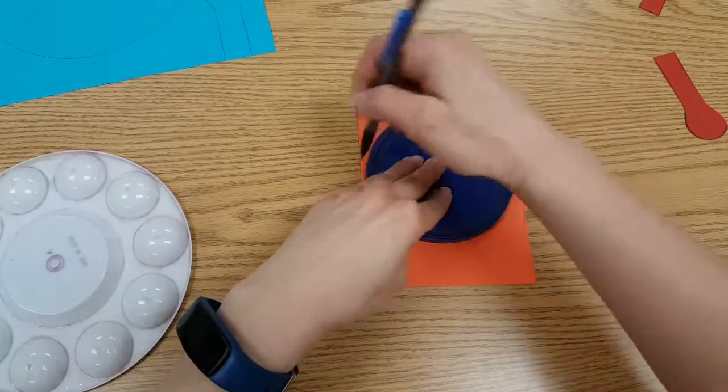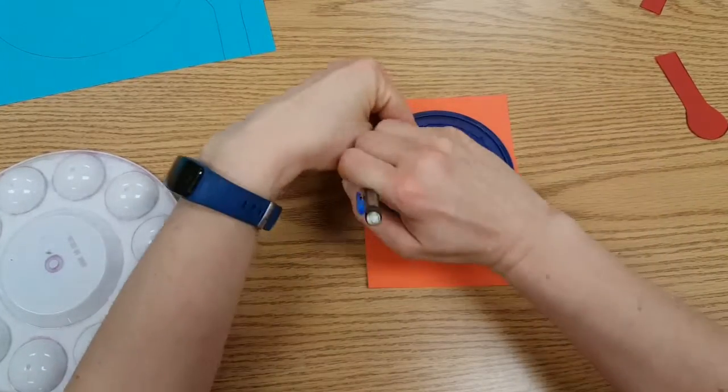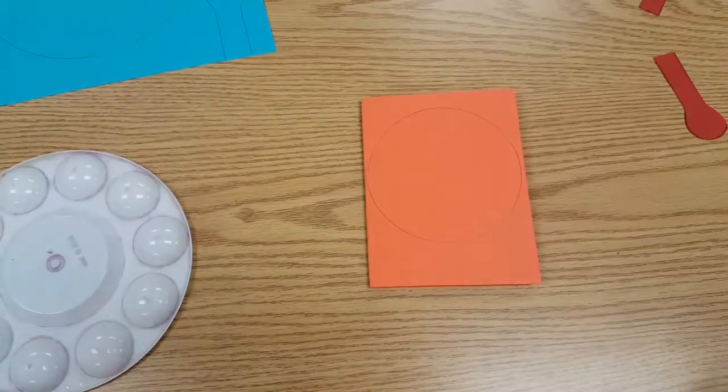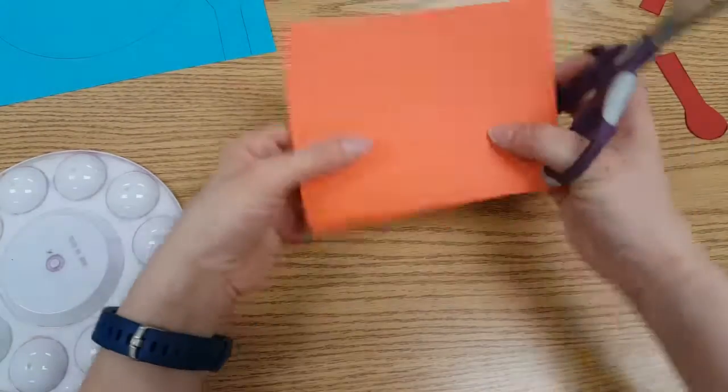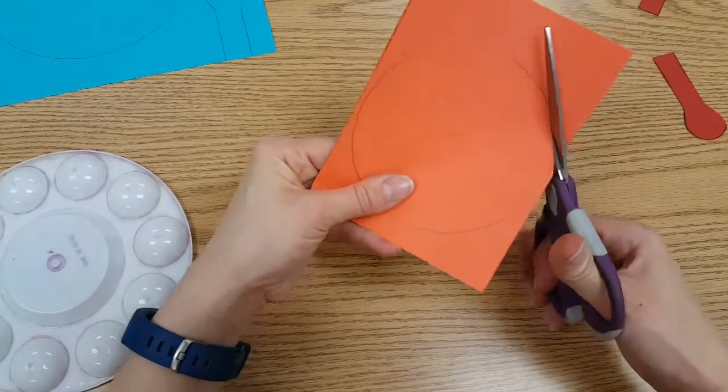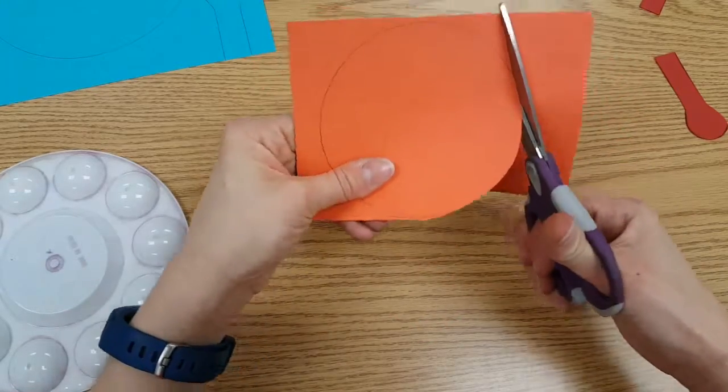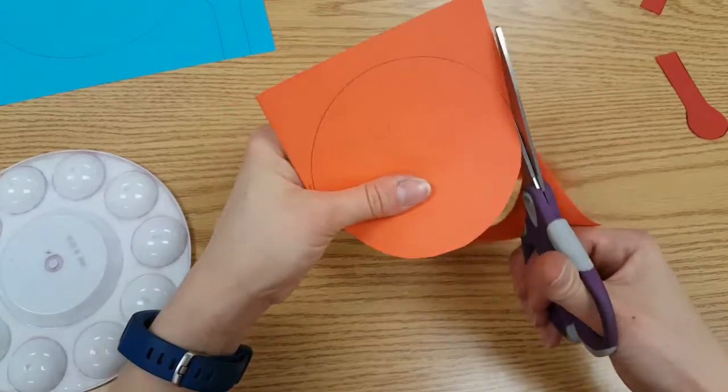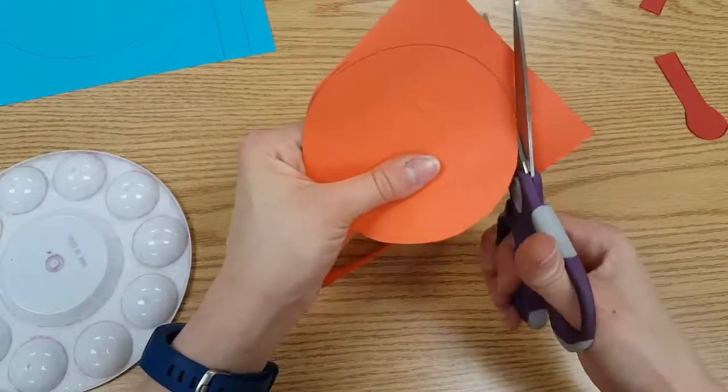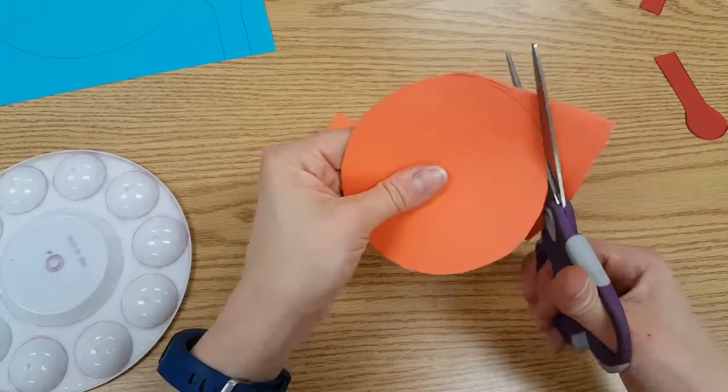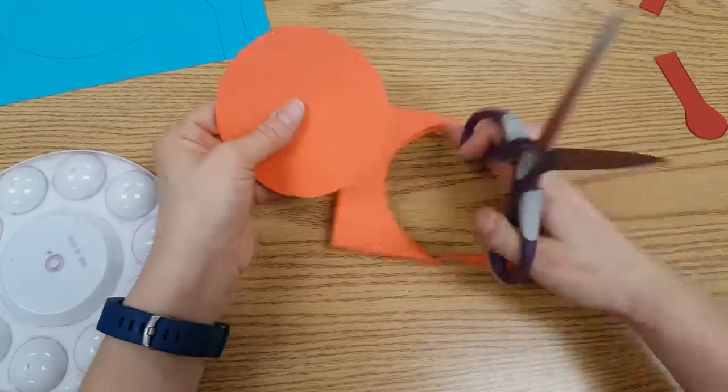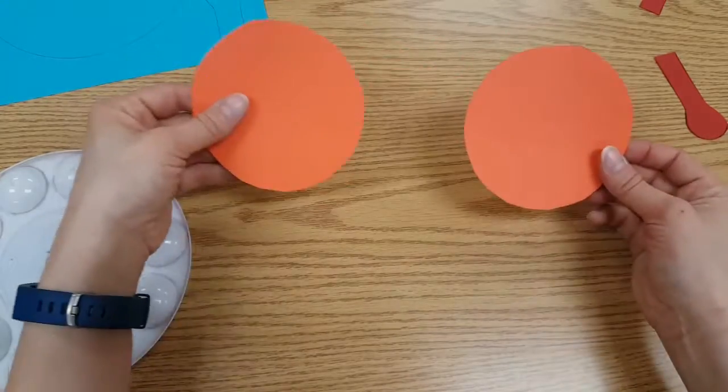We take a lid and we trace it. Keeping it folded we cut and then it gives us two.